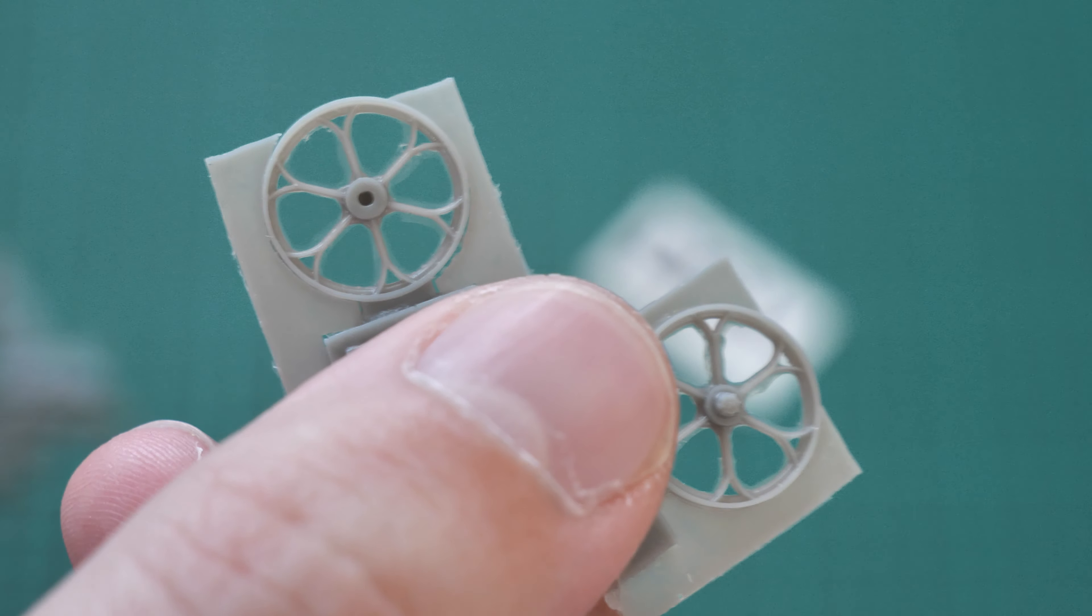Then we have the first part for the suspension frame. Here it is. You have to clean all the resin flash because otherwise it will be difficult to get it in place. Another suspension part—wheels will be installed on these pins, so it should be a relatively easy task. Just be sure to check the alignment of those wheels.